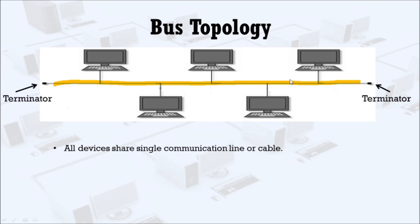This central cable is the backbone of the network, and we call it the bus. Now let's see how it works. This is node 1, this is node 2, this is node 3, this is node 4, and this is node 5.